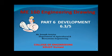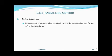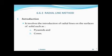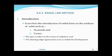Welcome to ME160 Engineering Drawing, Part 6, Section 6.3: Radial Line Method. The radial line method involves introduction of radial lines on the surfaces of solids such as prisms or cones. The apex is taken as the center of radiation, and the slanted line edges or generatrix act as radials for the development.